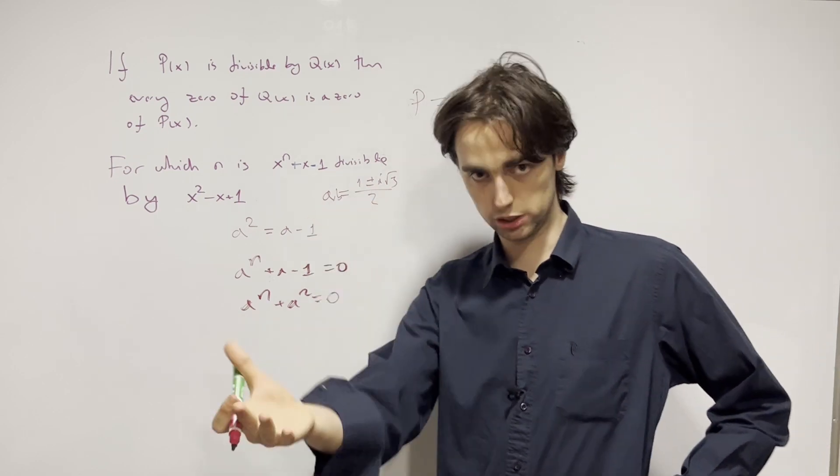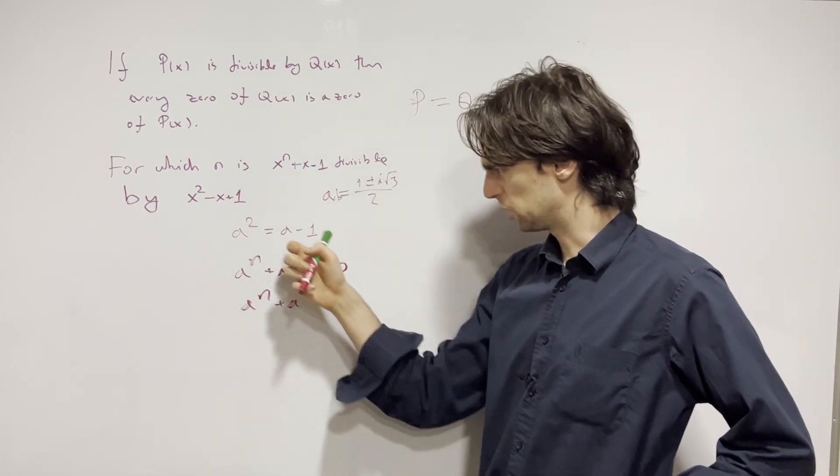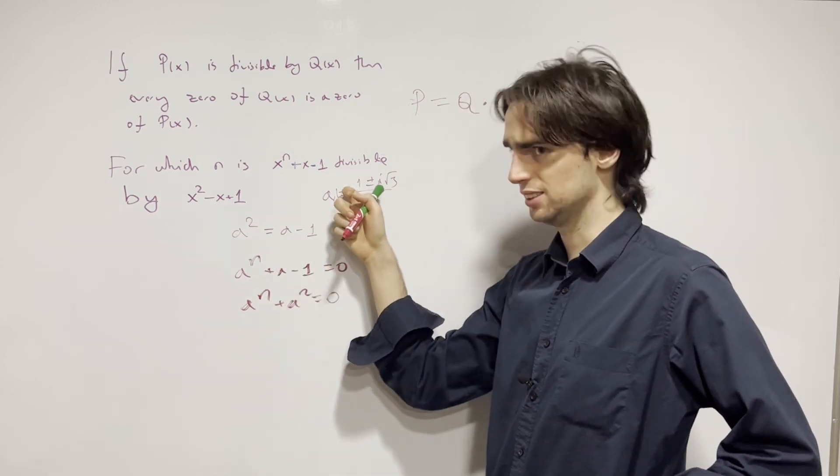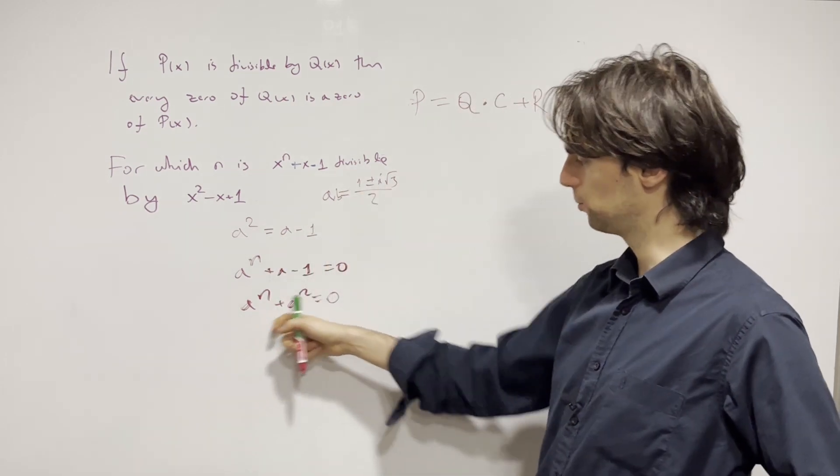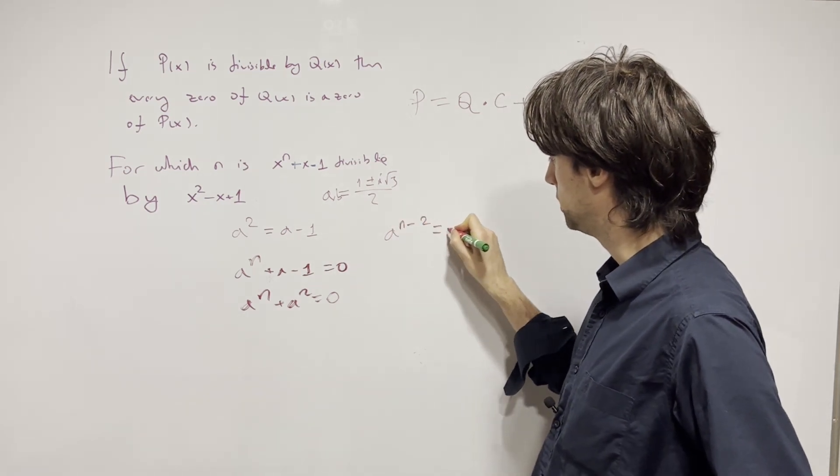Given that a squared is not equal to zero, and we can even check this out because otherwise a would be equal to one, which is not the case, we now know that this means a^(n-2) needs to equal minus one.